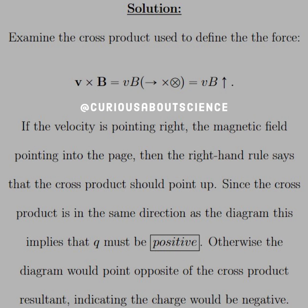This is important because now we can compare this cross product with the result of the diagram and see what is true about the charge. Since the cross product is in the same direction as the diagram, this implies that Q must be positive. The only way that's true is if the charge is positive. Otherwise, if the charge is negative, the diagram would indicate it's pointing the other way.